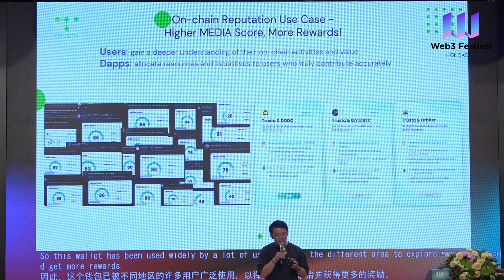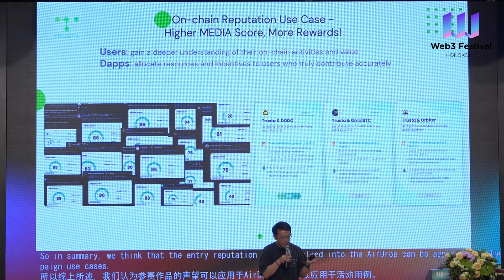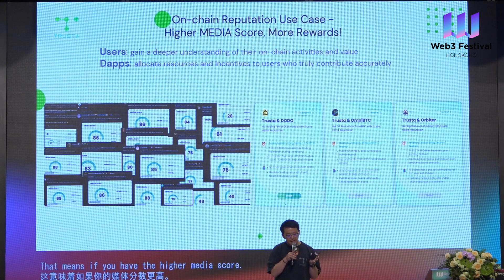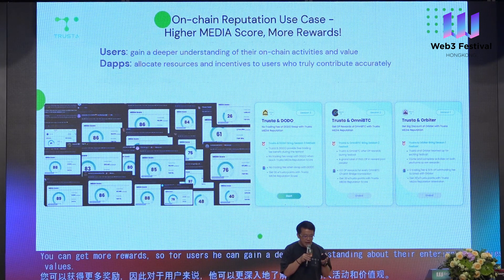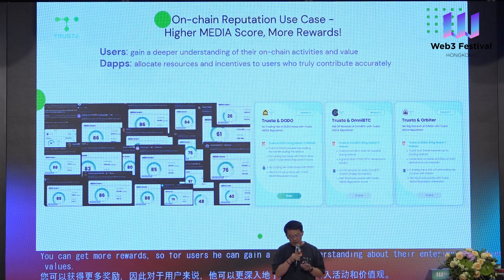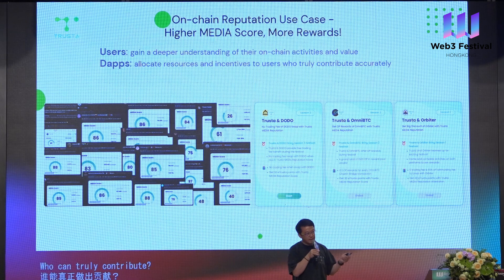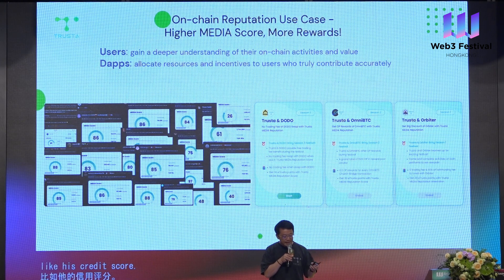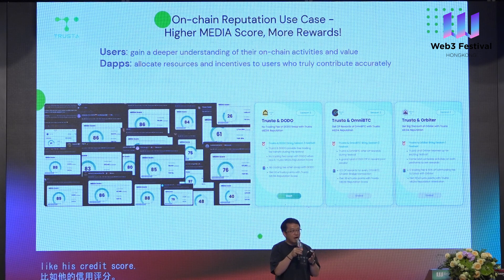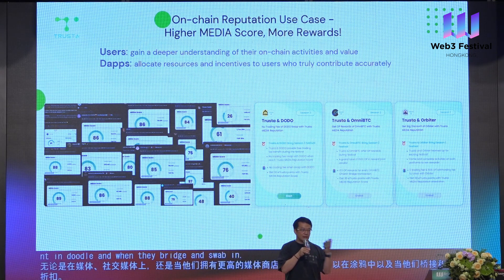In summary, we think that on-chain reputation can be applied into AI job and airdrop use cases. If you have a higher media score, you can get more rewards. For users, they can gain a deeper understanding about their on-chain activities and values. For apps and protocols, they can allocate more resources and incentives to users who can truly contribute to the ecosystem. A lot of people share their media score like a credit score on social media. When they have a higher media score, they can get a trading fee discount on Doodle, and when they bridge and swap on Omni and Orbiter, they can even get trading fees for free.